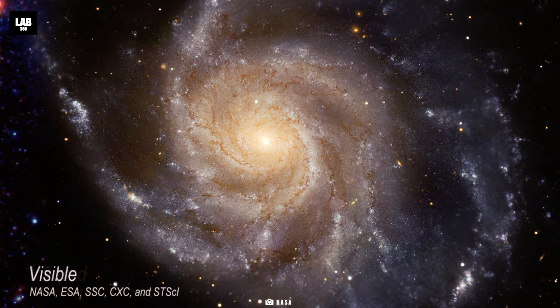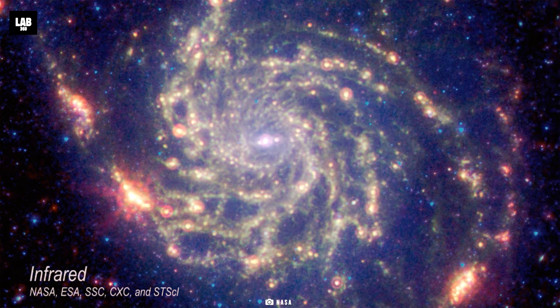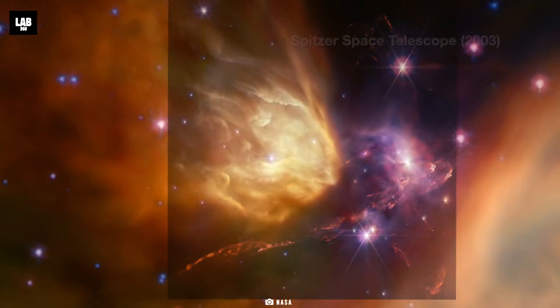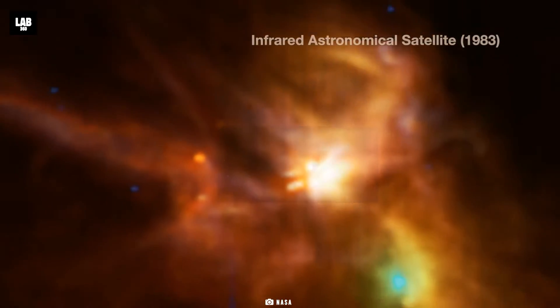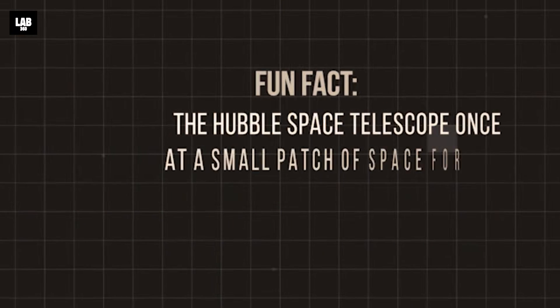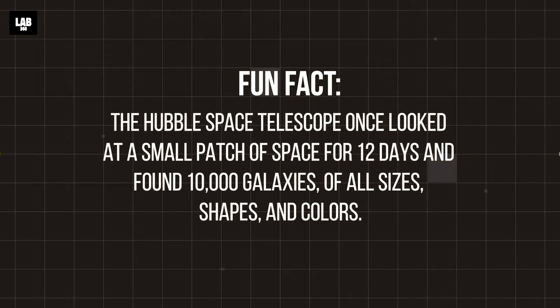As per some scientists, there could be as many as 100 billion galaxies in the universe. A mesmerizing fact: the Hubble Space Telescope once looked at a small patch of space for 12 days and found 10,000 galaxies of all sizes, shapes, and colors.